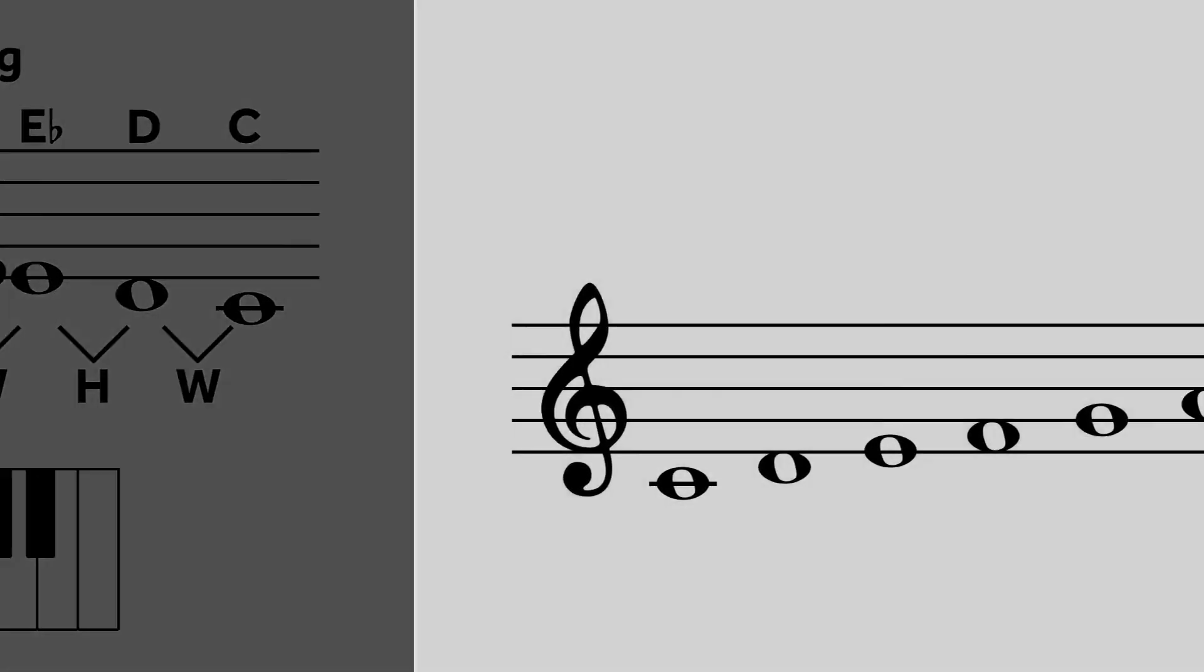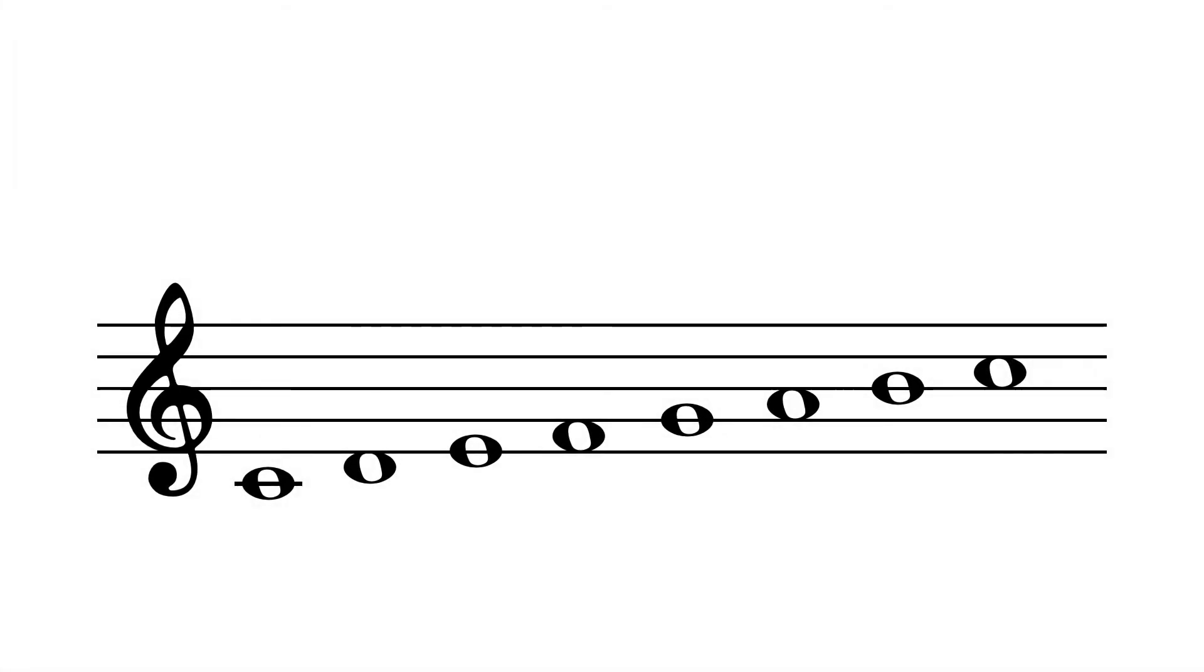Each note of a scale has a specific name and number. The number is referred to as a scale degree and is written as a number with a caret above it. The name of each scale degree is important for describing harmonic function and voice leading. The first note of the scale, the note which gives the scale its name, is called the tonic.